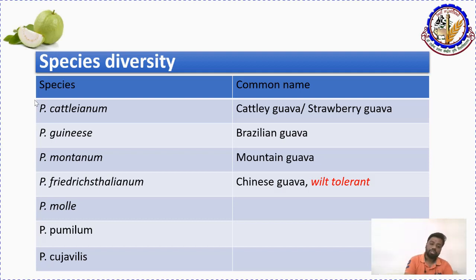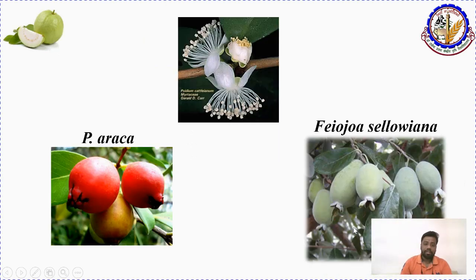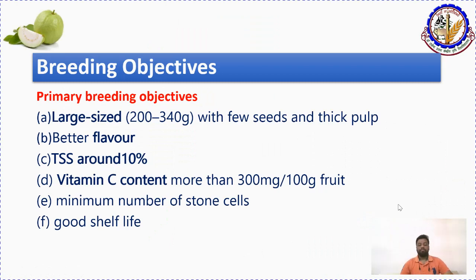These species are important for ICAR JRF and SRF exams. You can see photographs of Psidium cattleianum, which is red in color, and Psidium littorale, which is very tolerant. There is also Psidium friedrichsthalianum. Before going to the breeding perspectives, we should know the different breeding objectives.